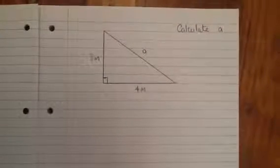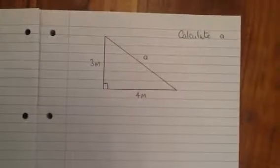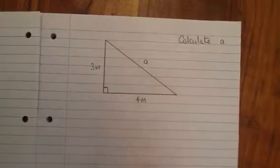This is how to use Pythagoras Theorem and in particular how to calculate the hypotenuse, which is the longest side of a right angle triangle. You can always tell which side it is because it's always opposite the right angle.